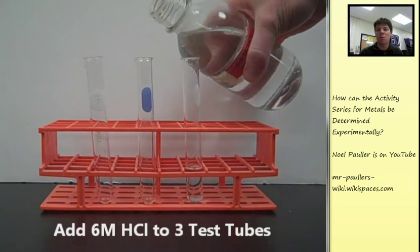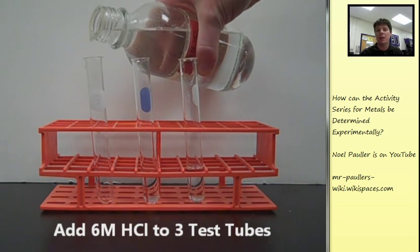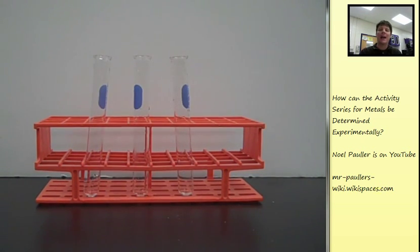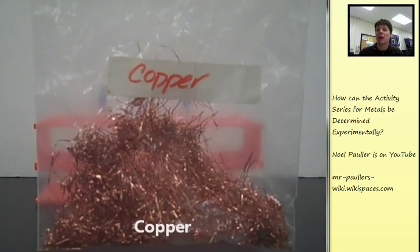Now let's add six molar hydrochloric acid to three different test tubes. Next up, we're going to be adding the three metals that we're testing into these tubes.